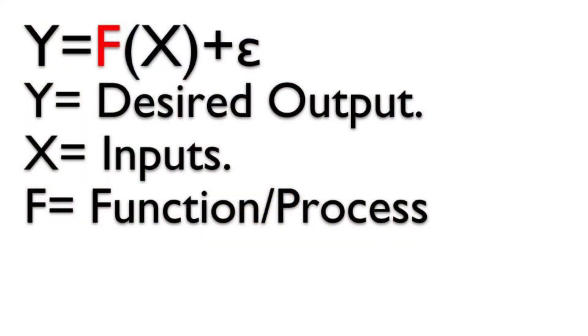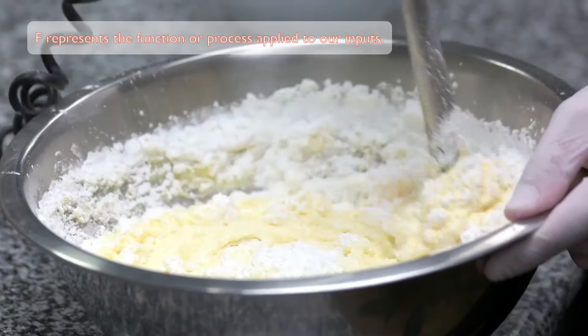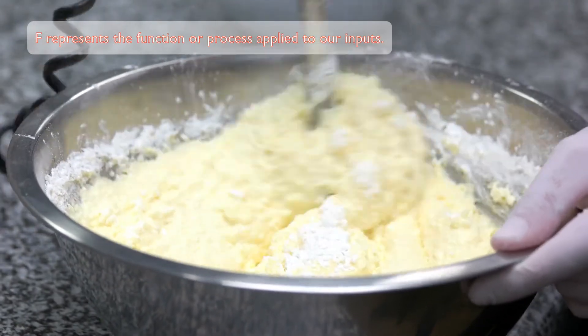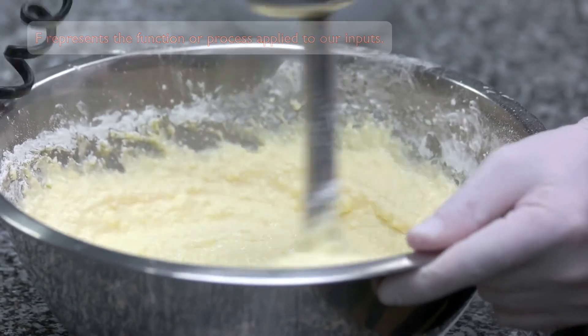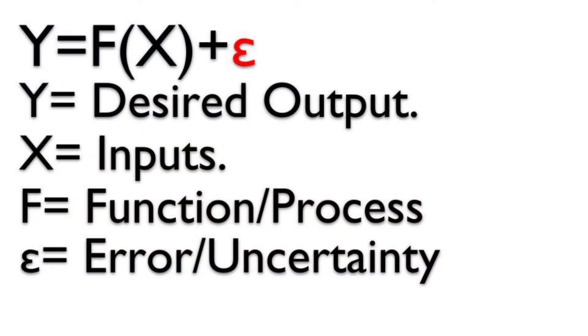These inputs are represented by X. X would be the ingredients we use to make the banana bread. To transform our X's into Y's, we need to apply a process as a means of transformation. F represents the function or process applied to our ingredients, which ultimately transforms the ingredients into banana bread. Epsilon is the final part of the problem solving equation that is used to account for any error or the amount of difference from the desired outcome that occurs due to uncertainty when the process is applied.